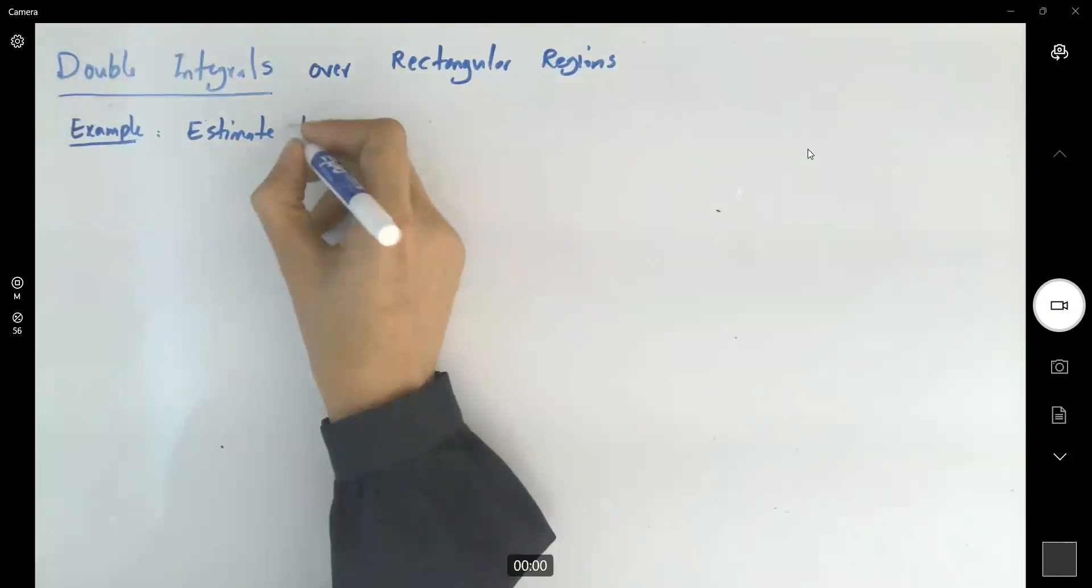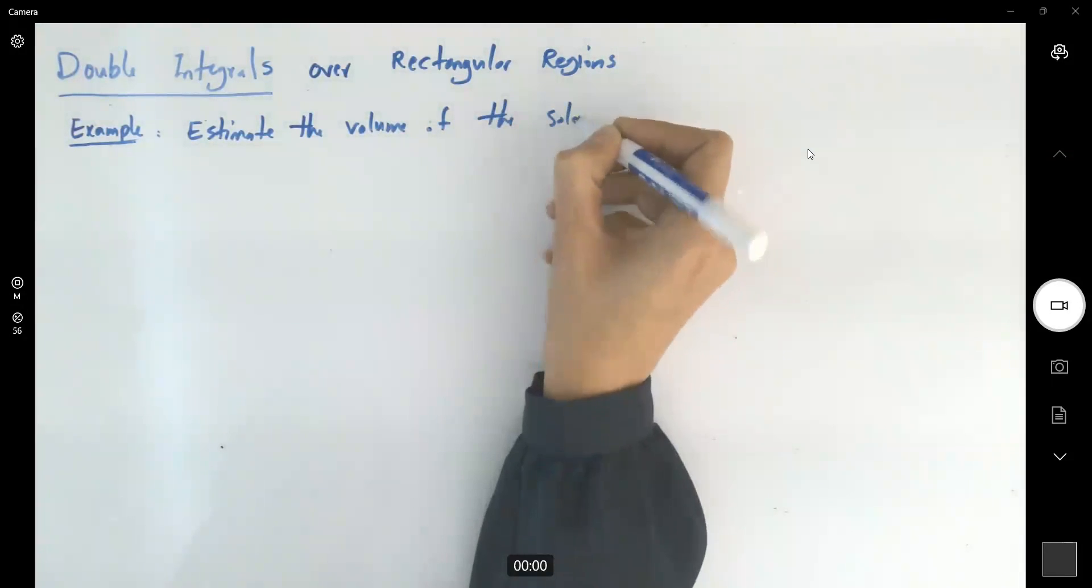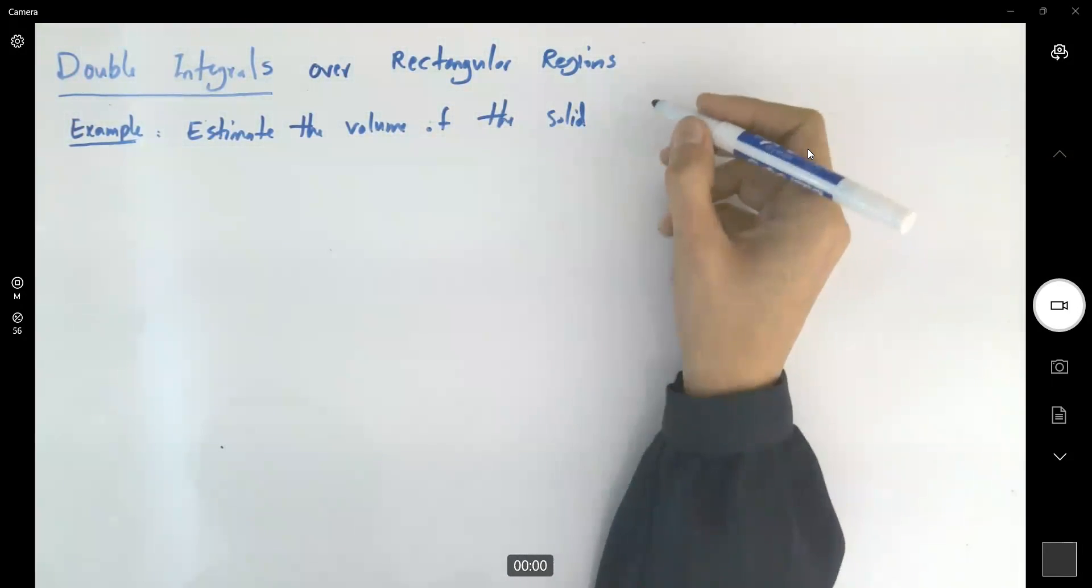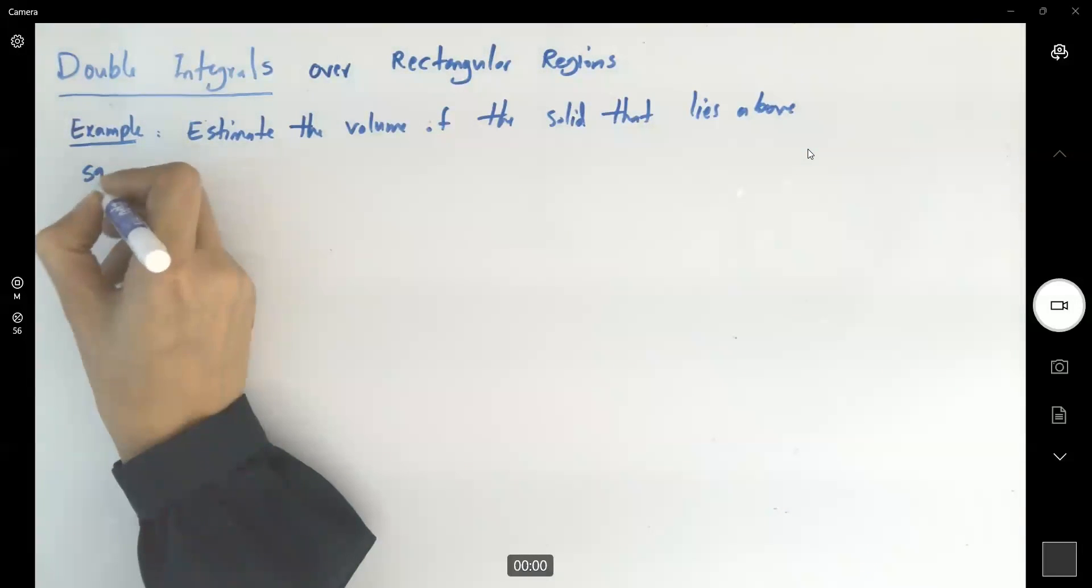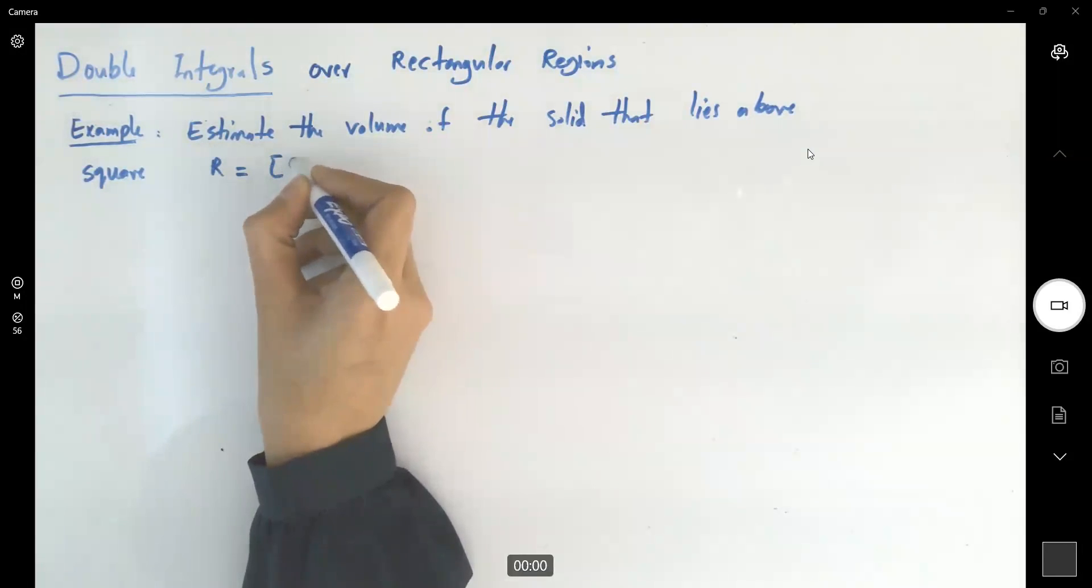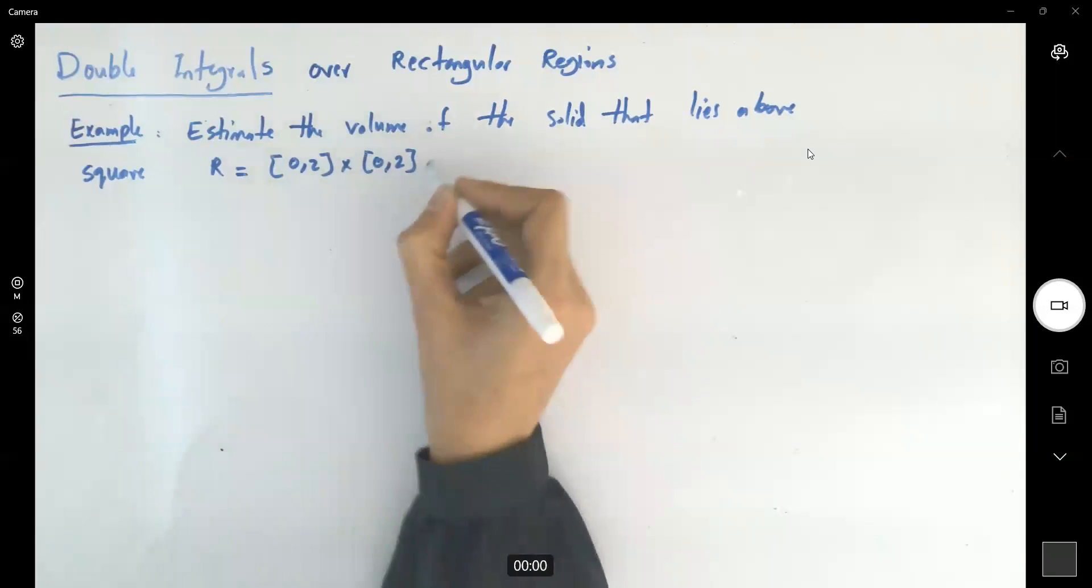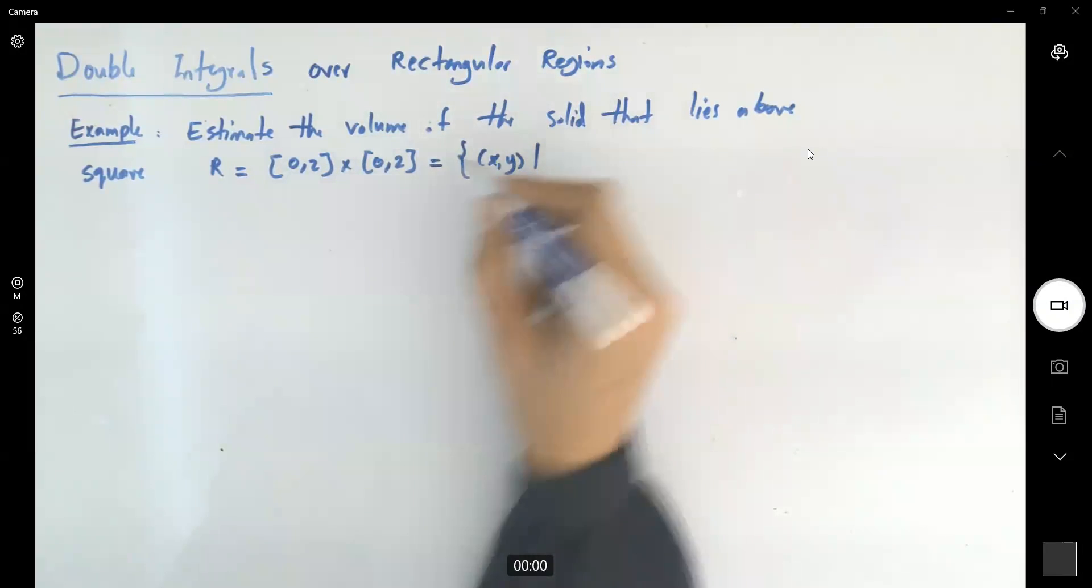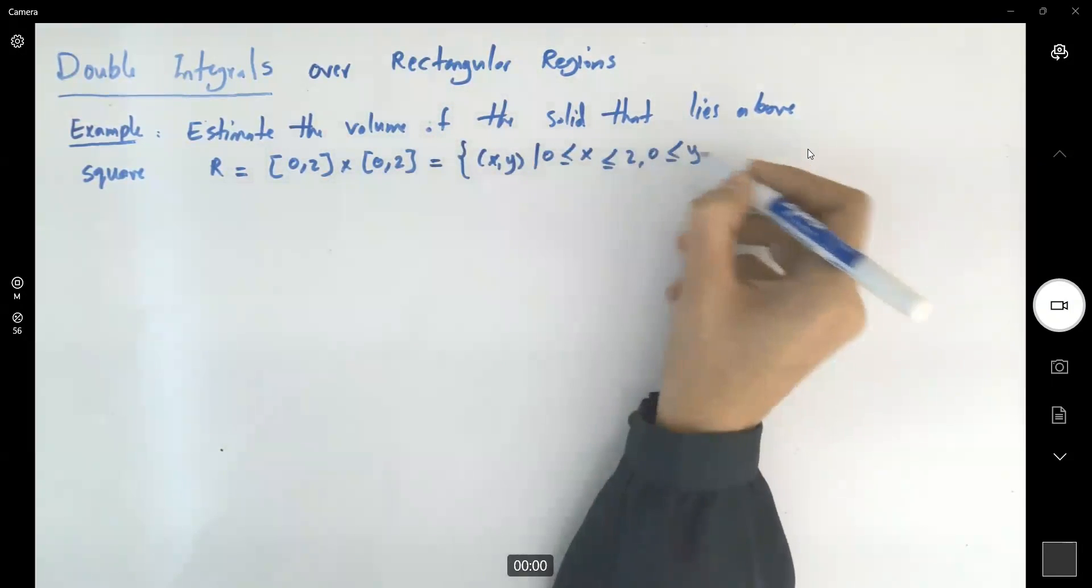Estimate the volume of the solid that lies above square, the square given to us is R equals 0 to 2 Cartesian product 0 to 2, the way that we define this is this is the set of all x and y values such that x ranges between 0 and 2 and y ranges between 0 and 2.